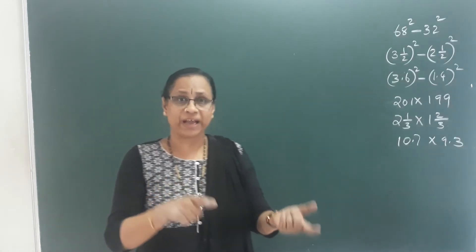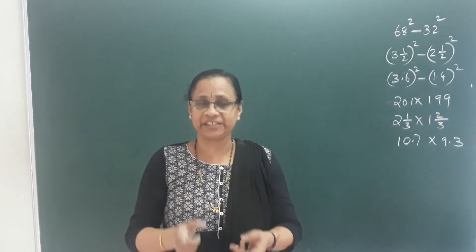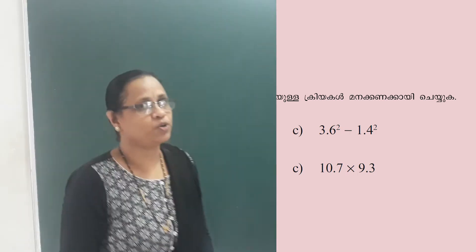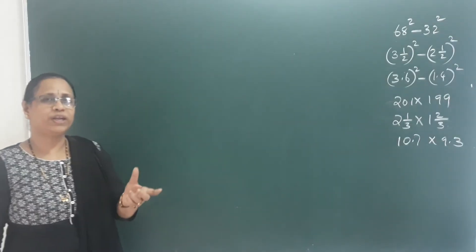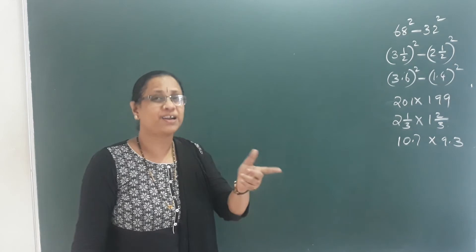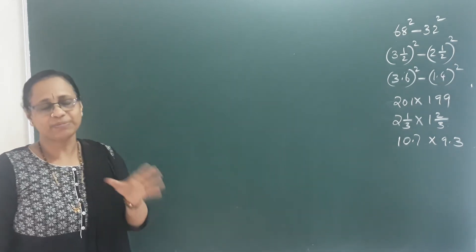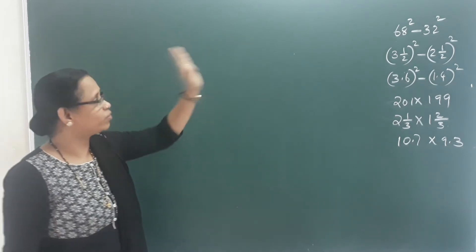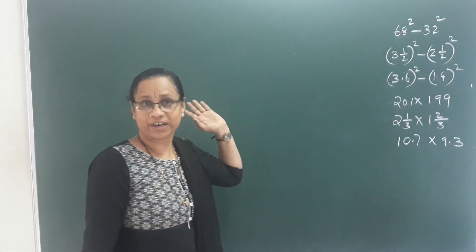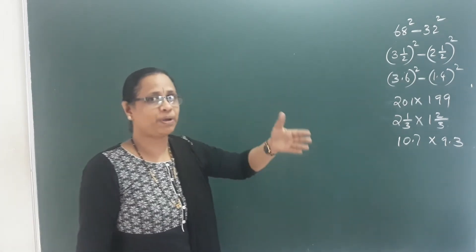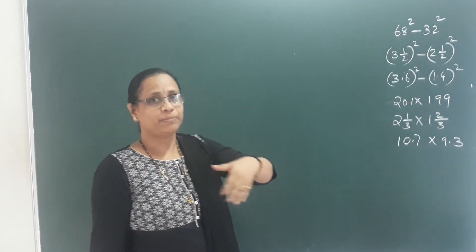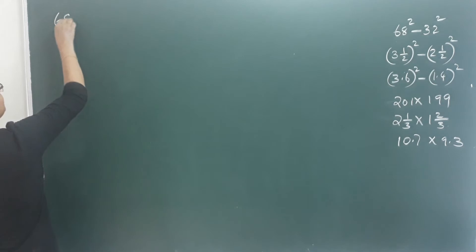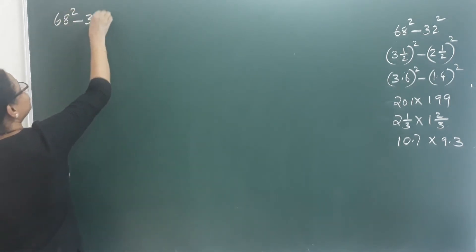Now we have a practice problem. We have to look at page number 83, first question: Compute the following in your head. What do we say about compute? With our head we can calculate this question — we can work it out. First question: 68 square minus 32 square.